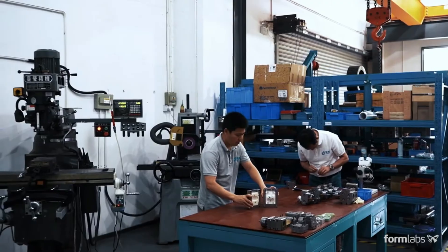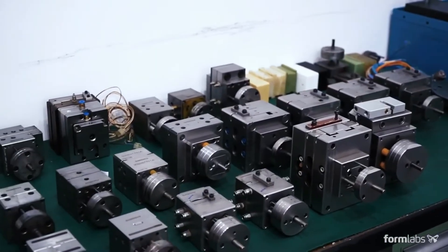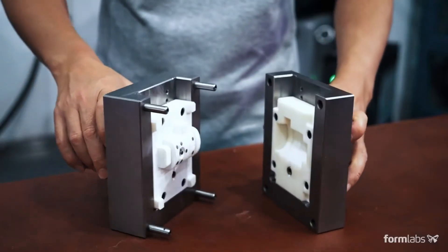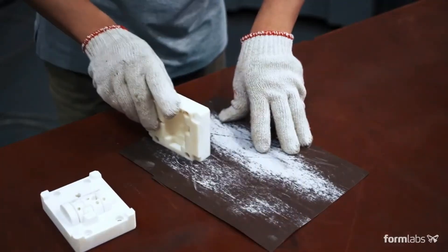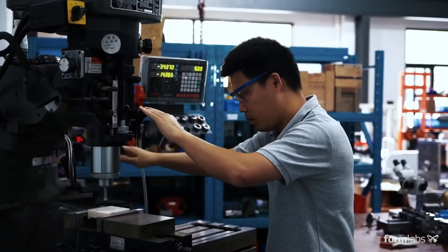3D printed molds are often designed to fit within standard metal frames, which extend lifetime of the mold. Prior to assembly, you may choose to sand or machine the mold to meet critical dimensions.